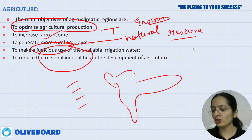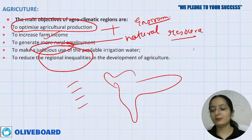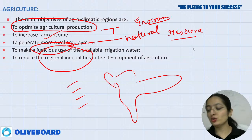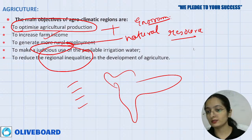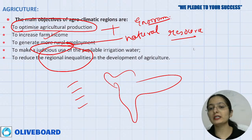Zone 6 is the Trans-Gangetic Plains zone. Crop production and soil management are the two key terms of agronomy.